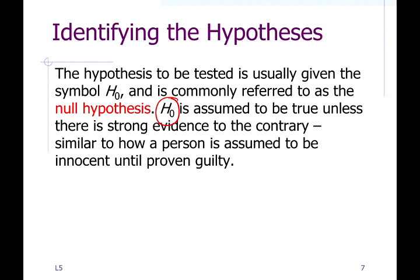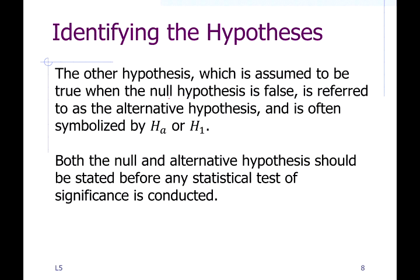So the null hypothesis would be: this person is innocent. But if there's enough evidence, you reject that hypothesis, and then your alternate would be: this person is guilty. We assume the null hypothesis is true, and if we determine it's not true, we fall back on plan B — the alternate hypothesis. Some books use Hₐ; we're going to use H₁ for the alternate hypothesis.